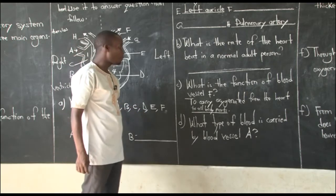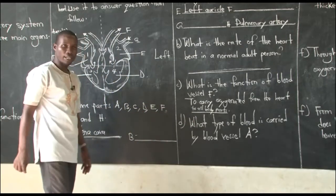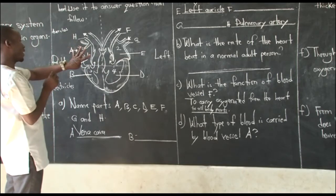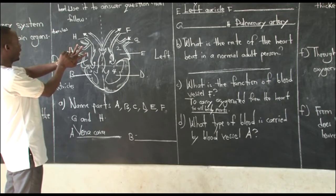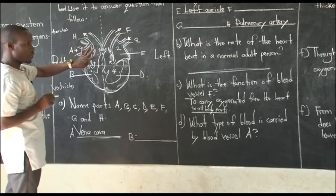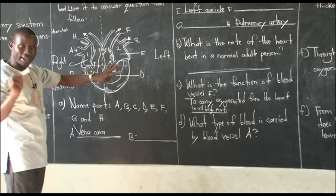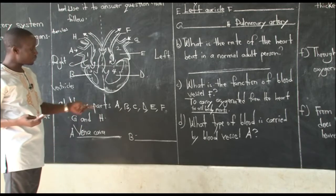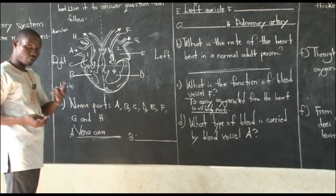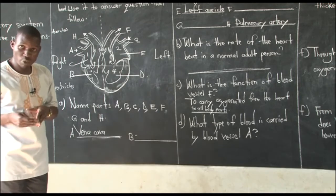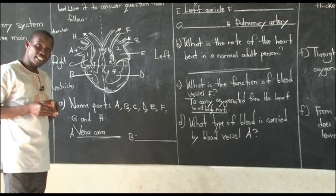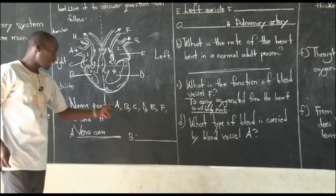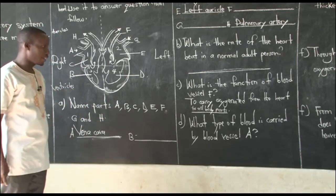Part D asks: what type of blood is carried by blood vessel A? Blood vessel A is the first vessel — the vena cava. Remember, this is the major vein, and all veins carry deoxygenated blood, apart from the pulmonary vein. We have two types of blood: oxygenated blood, with oxygen, and deoxygenated blood, without oxygen. You can now answer this question.